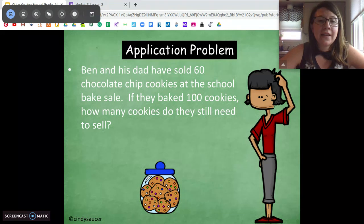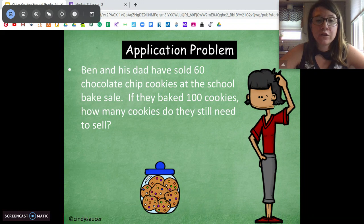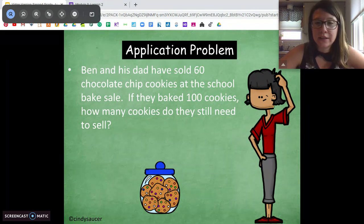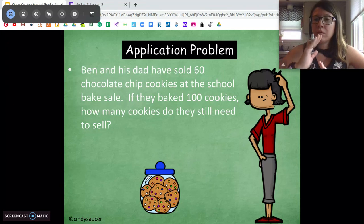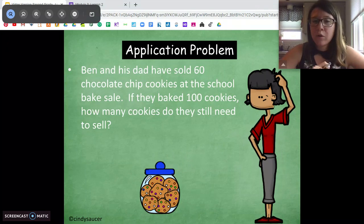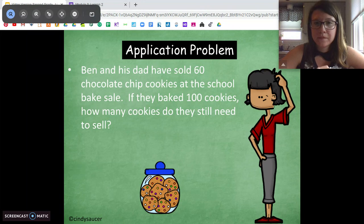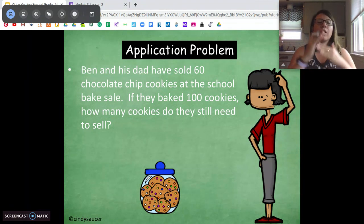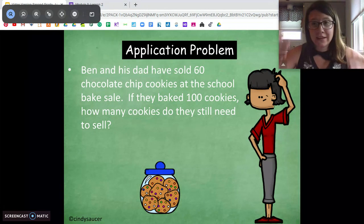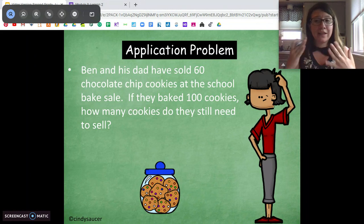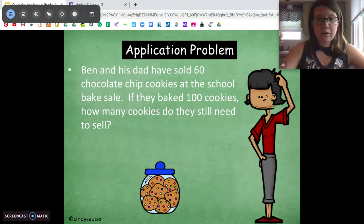This says, Ben and his dad have sold 60 chocolate chip cookies at the school bake sale. If they baked 100 cookies, how many cookies do they still need to sell? So, pause the video, talk with someone at home about what they are asking for. What's the problem asking for? Good. It's asking for how many cookies do Ben and his dad need to sell? They baked 100, they sold 60. We need to figure out how many more they need to sell.